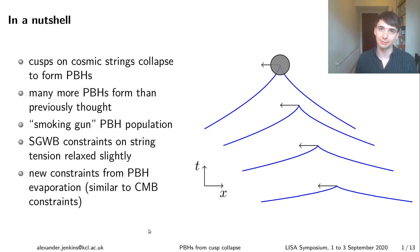And I'll go on to discuss the implications, in particular, how this affects gravitational wave constraints on cosmic strings, and how we can place new constraints on cosmic strings using the evaporation of these primordial black holes.